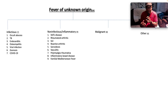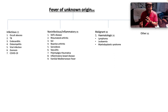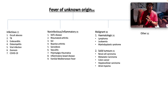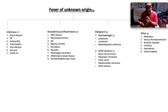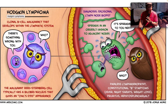Malignant causes include hematological malignancies — classically lymphoma, leukemia, and myelodysplastic syndromes — and solid tumors such as renal cell carcinoma (the internist's tumor due to its many manifestations), metastatic carcinoma, colon cancer, hepatocellular carcinoma, and atrial myxoma. Other causes of fever include drug-induced fever, venous thromboembolism, alcoholic hepatitis, factitious causes, hematoma, and endocrinopathy.